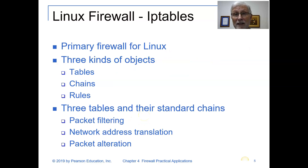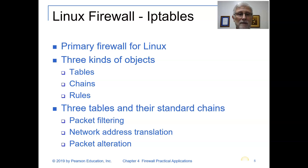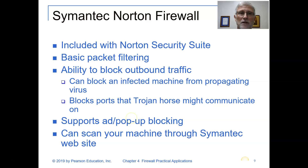As far as Linux is concerned, it uses a feature called IP Tables. It's the primary firewall for the latest Linux versions. It has three different types of objects: tables, chains, and rules. The three tables and their chains cover packet filtering, network address translation (NAT), and packet alteration.